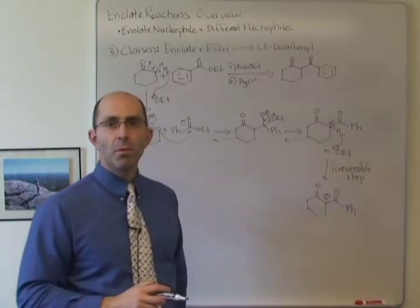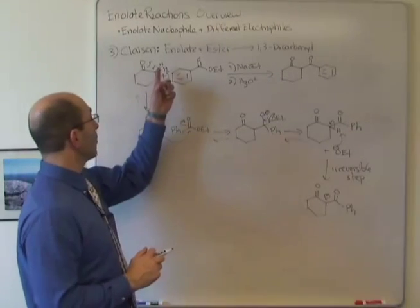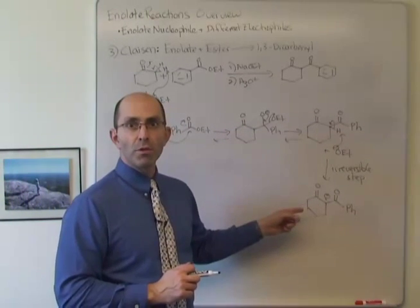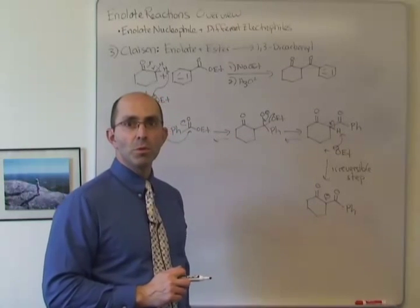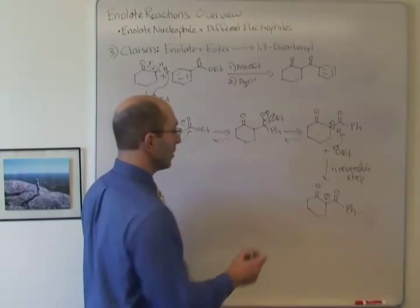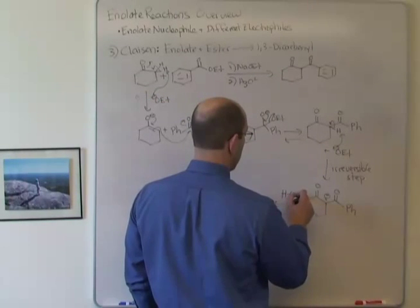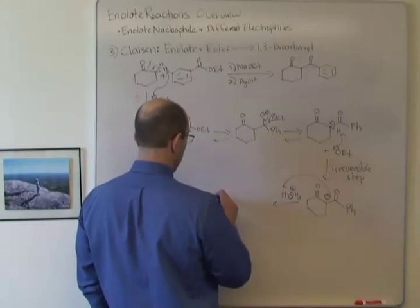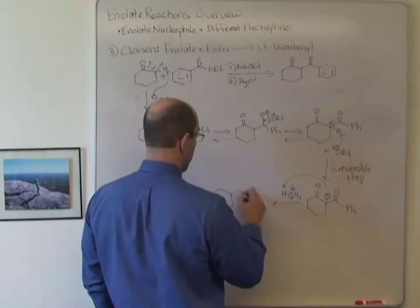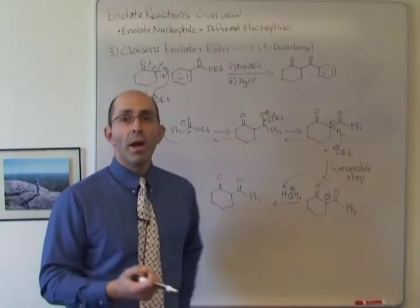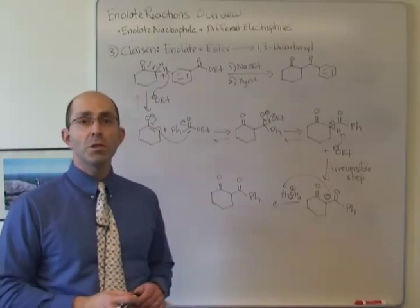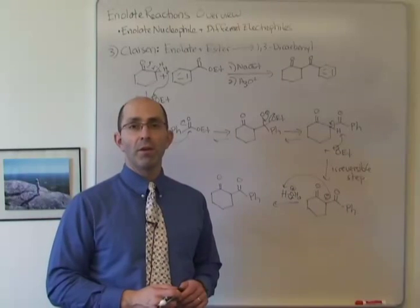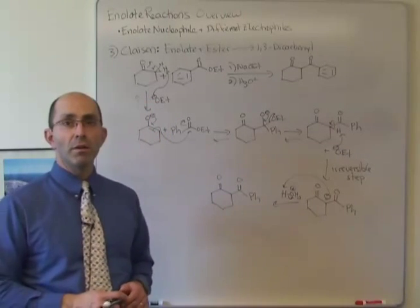This irreversible deprotonation is why you'll read that you need two alpha protons: one to form the initial enolate that forms the carbon-carbon bond, and a second one to enable this irreversible step so the reaction goes productively to products. The final step, and the reason we add acid, is to form the neutral product — the 1,3-diketone. So that's an overview of three enolate-type reactions: alkylation, aldol (enolate with an aldehyde or ketone), and Claisen (enolate plus an ester).